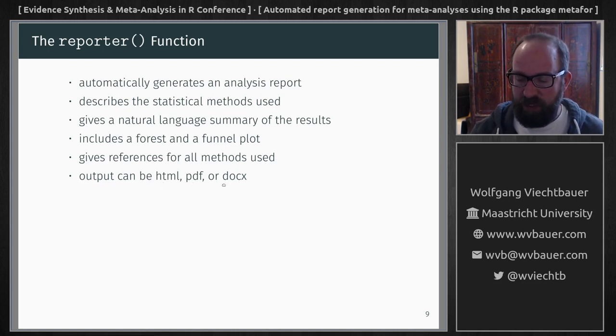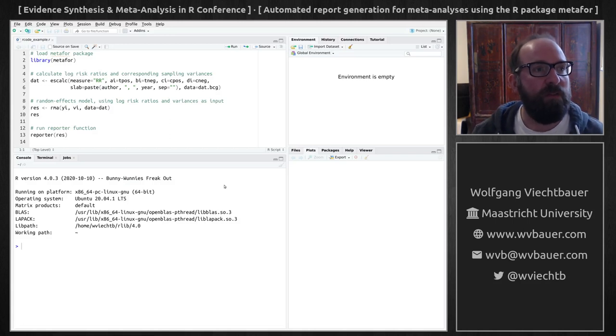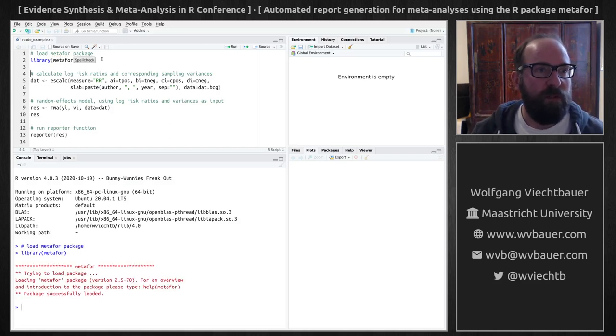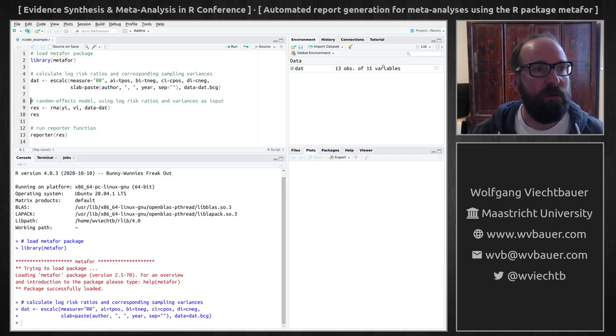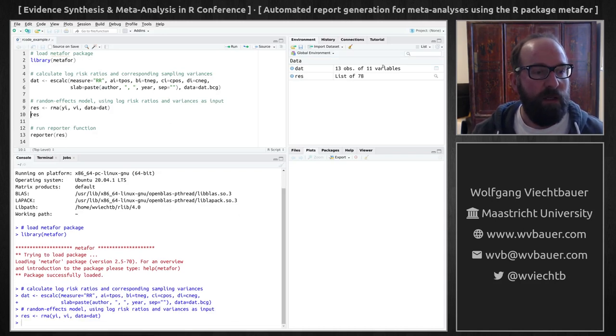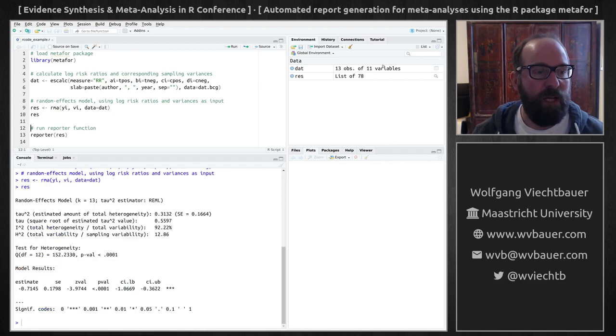So let me demonstrate how this works. So we first load the metafor package then I'm gonna again compute the log risk ratios and variances and then I could fit a random effects model and then look at the results.